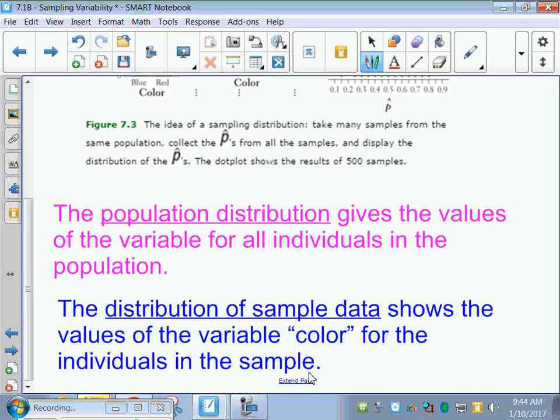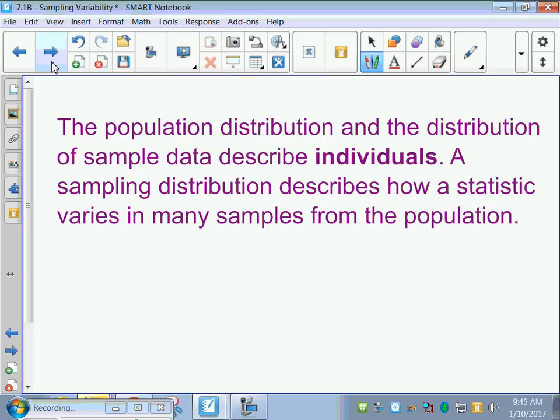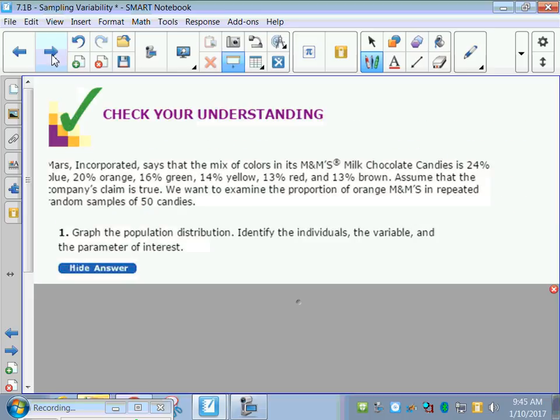The distribution of a sample data, this is like singular. This is one draw. When we're talking about sampling distributions, it's a whole bunch of dots. It's all 500 that we took. The population distribution gives the values of the variable for all individuals in the population. 100 red, 100 blue, that's population distribution. Think bar graph. The distribution of sample data shows the values of the variable color for the individuals of the sample. Same thing, this is the bar graph. Both of these are our little bar graph. Population represents the whole thing. Sample would be one sample. The population distribution and the distribution of sample data describe individuals. A sampling distribution describes how a statistic varies in many samples from the actual population. So your dot plot that you're looking at, many of them.